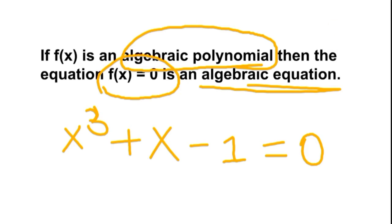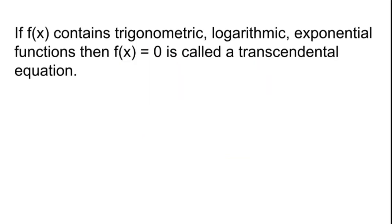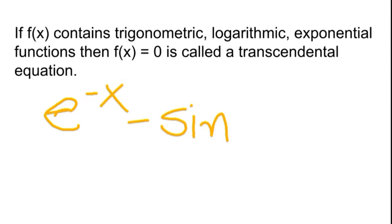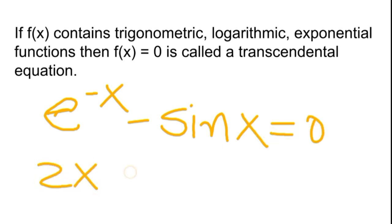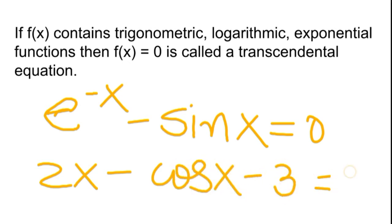What is a transcendental equation? If f(x) contains trigonometric, logarithmic, or exponential functions, then f(x) = 0 is called a transcendental equation. For example, e^(−x) − sin(x) = 0, or 2x − cos(x) − 3 = 0. Both of these are transcendental equations.